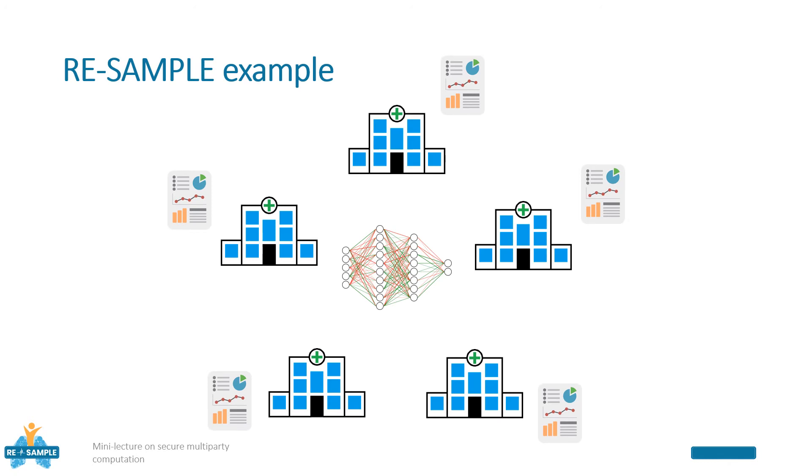If you're wondering how this example may fit in the ResAmple project, let's try to replace the group of alcoholics with a group of hospitals, and replace the amount of beers with patients' records that the hospitals do not want to share with the others, maybe for privacy concerns.